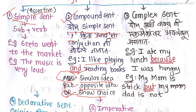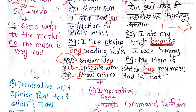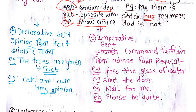The third type is the complex sentence. It has an independent clause and a dependent clause. For example: 'I ate my lunch because I was hungry.' Here, 'because I was hungry' is the dependent clause — it depends on the main clause. Conjunctions like 'because,' 'if,' 'when,' and 'although' are used in complex sentences.